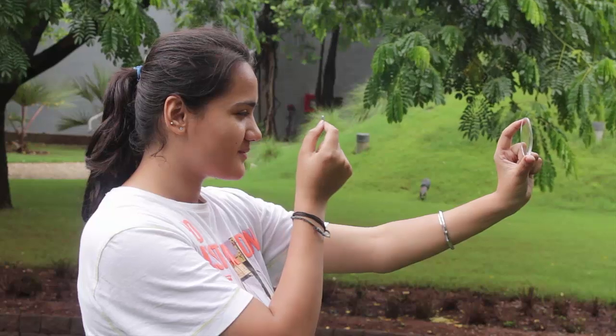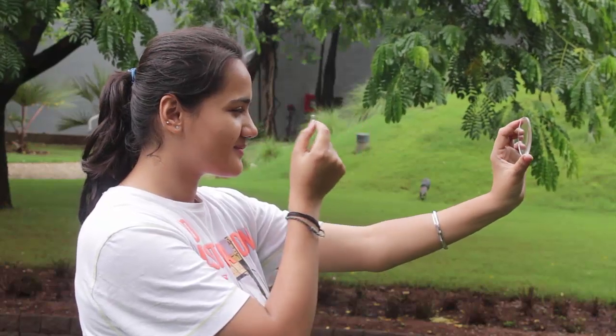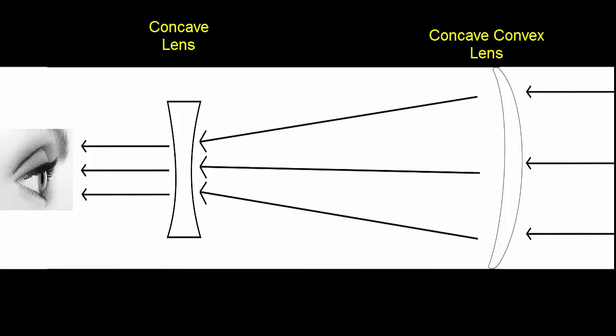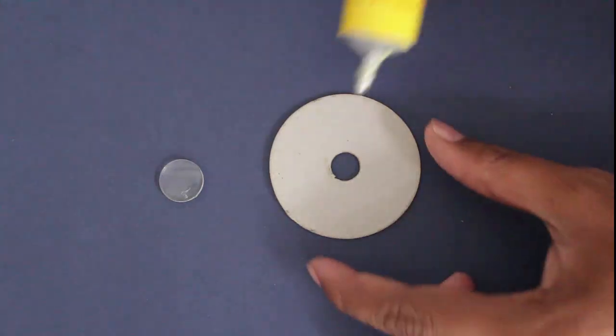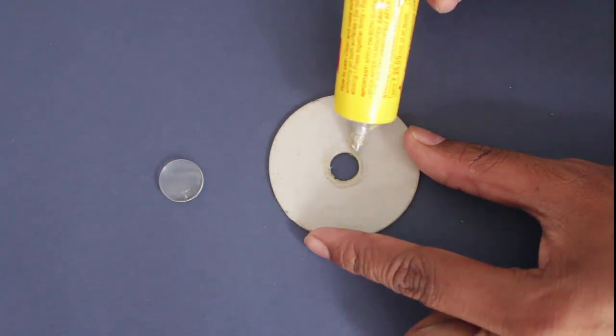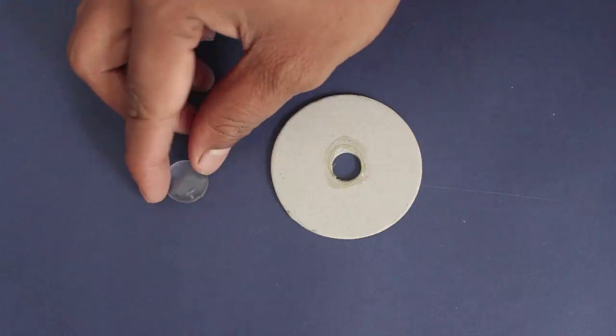Hold both lenses in your hands and adjust the distance between them to see a far away object clearly. This schematic diagram shows the ray diagram of the telescope. Now first glue the outer rim of the small eyepiece onto the lens holder.